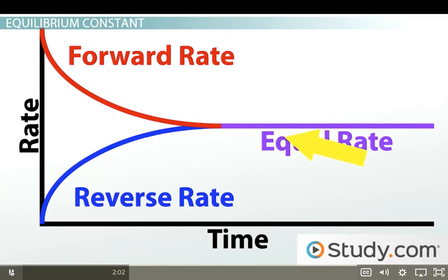Eventually, equilibrium is reached, and the graph turns into one straight horizontal line.